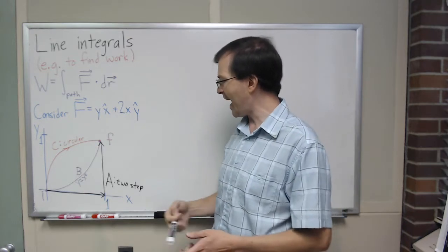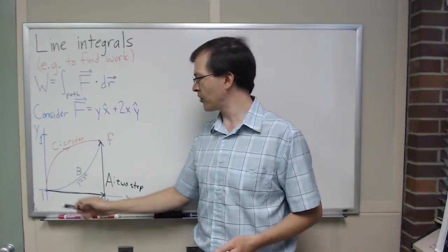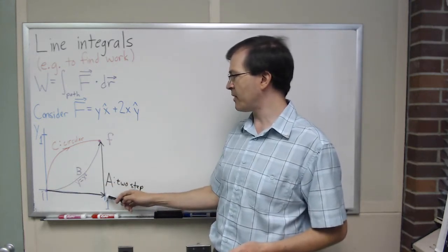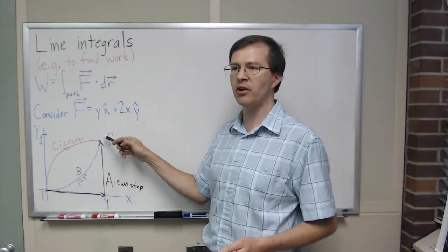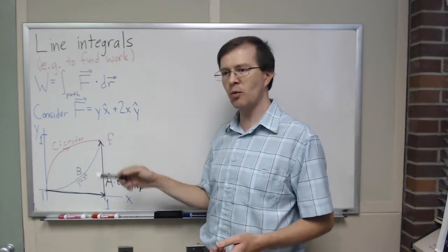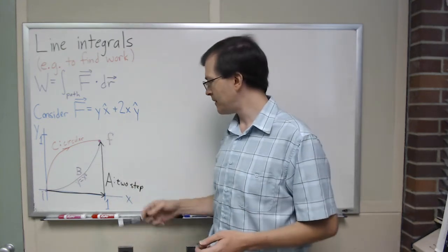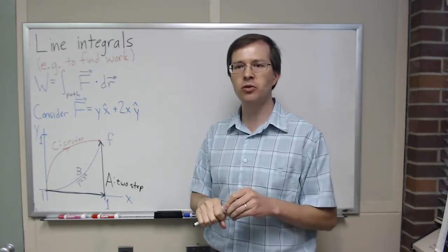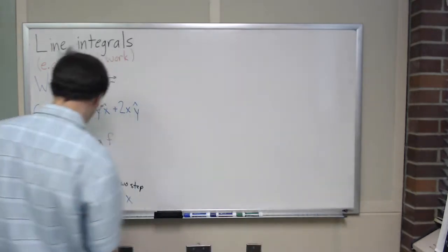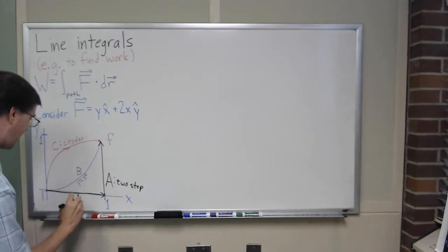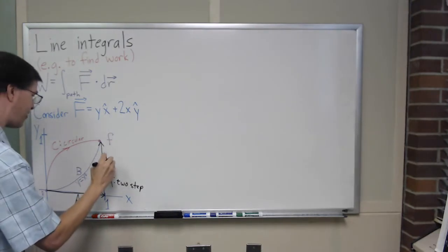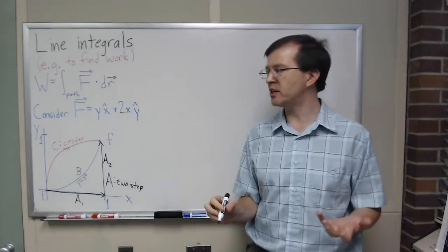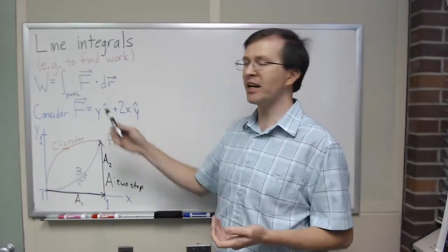Path A is in some sense the simplest. First we go straight along the x-axis, and then from there we go straight up parallel to the y-axis, getting us to where we're going in two steps. Because it's a two-step path, I'm going to break this up into two pieces — I'll call them path A1 and path A2. Any time you have a path broken into two pieces, we break our integral into two pieces.